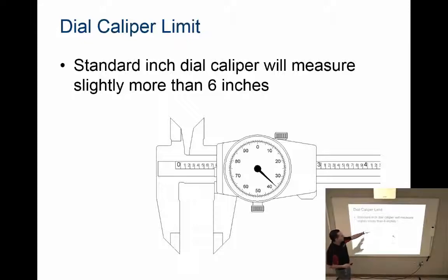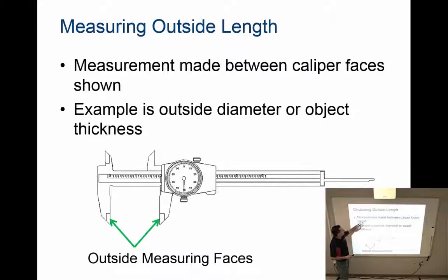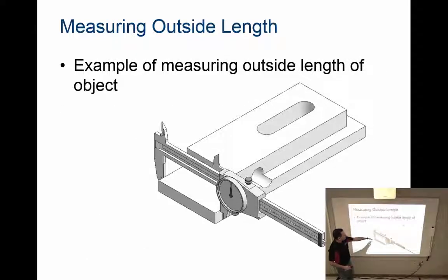Let's talk about the different ways we can capture measurements. The first is outside length. Using these measuring faces down here, the two prongs facing down, I can record the outside length or diameter for an object. If this is the block and I want the depth, I place my measuring faces on either side and then read the measurement on the caliper.